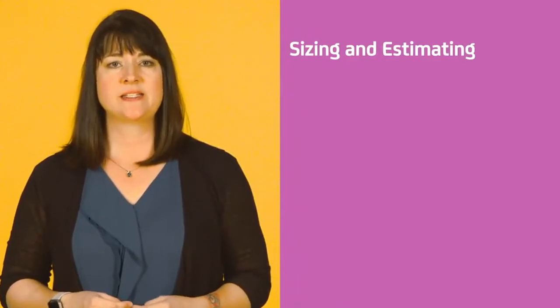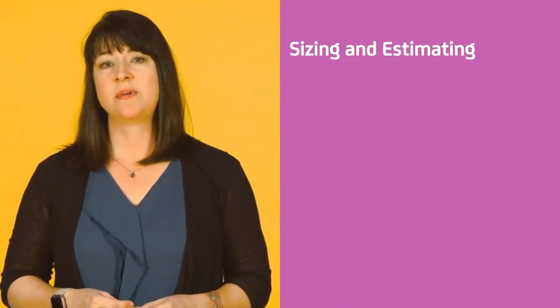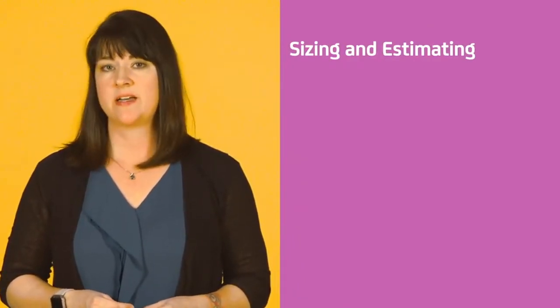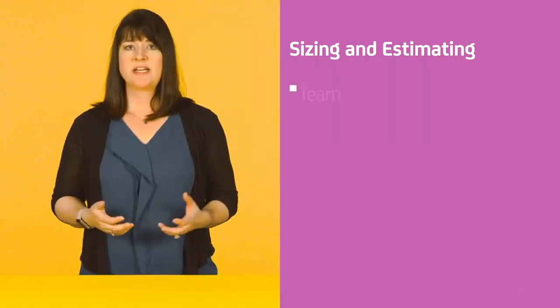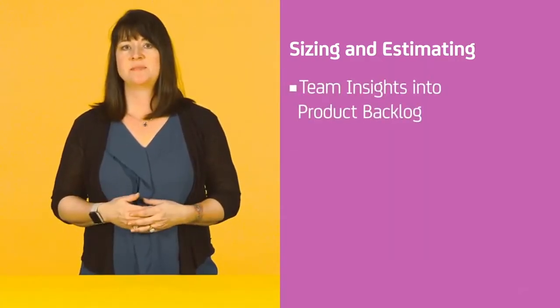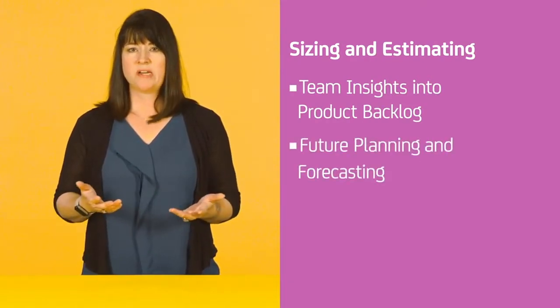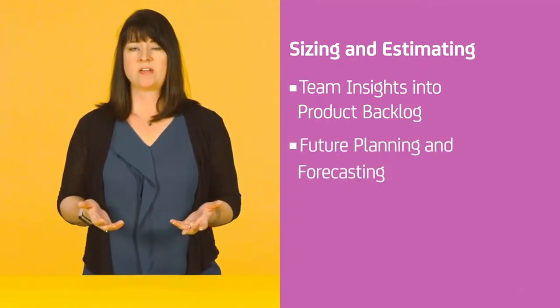Agile teams plan the work they believe can be done within each iteration based on the highest value features. When it's time to start planning your iterations, an important task called sizing and estimating is used to determine the amount of work your team can realistically accomplish. Sizing and estimating are both ways of gathering team insights into the effort of items in the product backlog, and these insights inform the product owner on how to rank the product backlog.